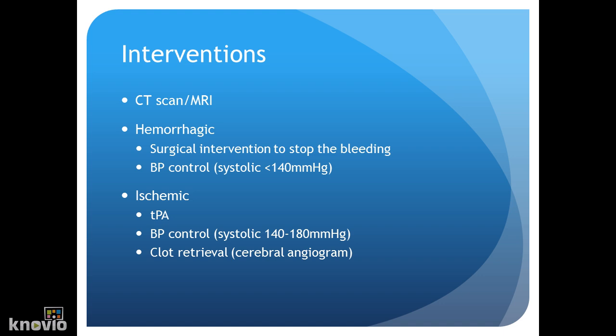If the patient presents with an ischemic stroke, we'll determine if they're eligible for TPA. In order for a patient to get TPA, they must arrive within three hours of the onset of symptoms. Other things that may exclude them from TPA include uncontrolled blood pressure — maintaining above 185 — or any history of bleeding. We won't give TPA in those cases.